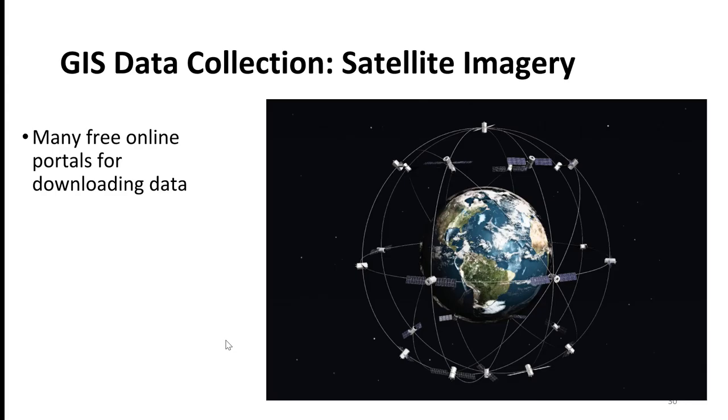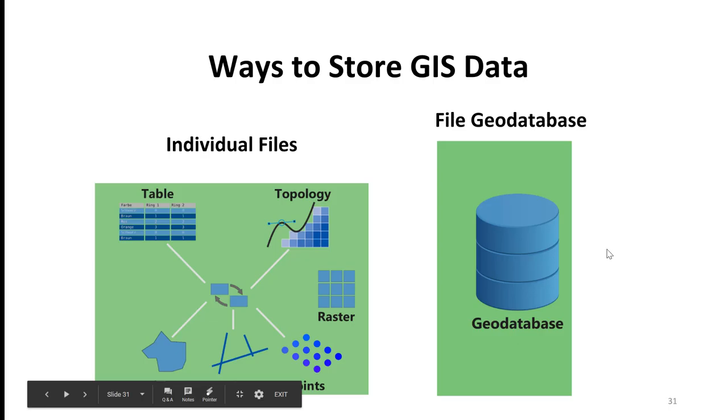There are many free online portals for downloading data. This is something we'll talk about either at the end of this lecture or in your first exercise. There's just endless amounts of data that are out there. Fortunately, there's lots of free information readily available online. GIS data is stored in two different ways: you can store them as individual files, or you can upload it into something called a file geodatabase, which helps us to organize all of our GIS data.